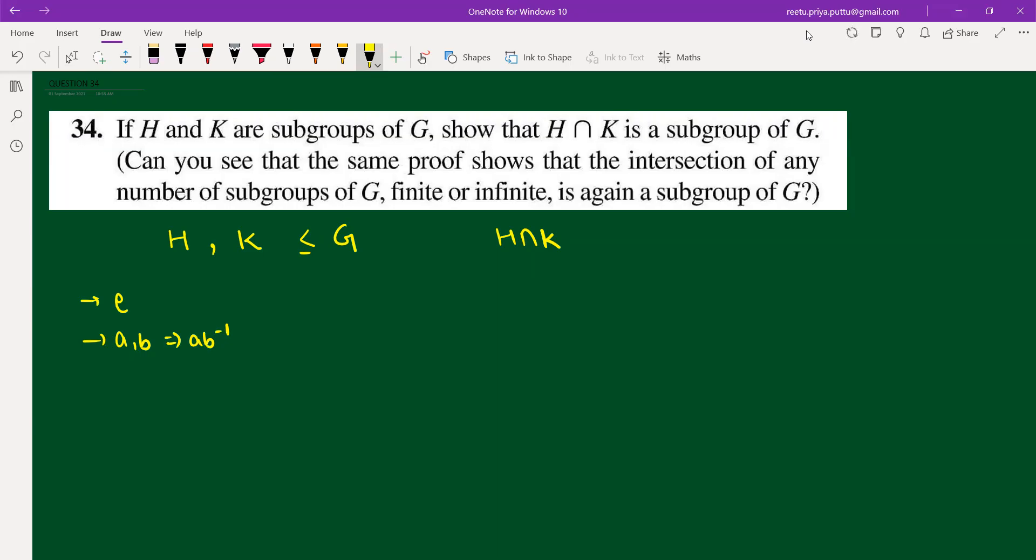We will start by identity. Clearly, we can see that H and K are subgroups, so identity belongs to H and identity belongs to K. This is how we can say that identity belongs to H intersection K. We want to show identity because this implies that H intersection K is non-empty, and after defining this, we can say that we will consider a and b from H intersection K.